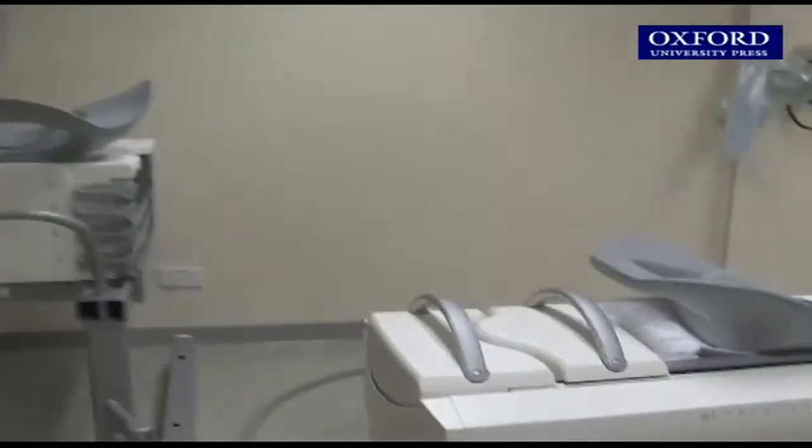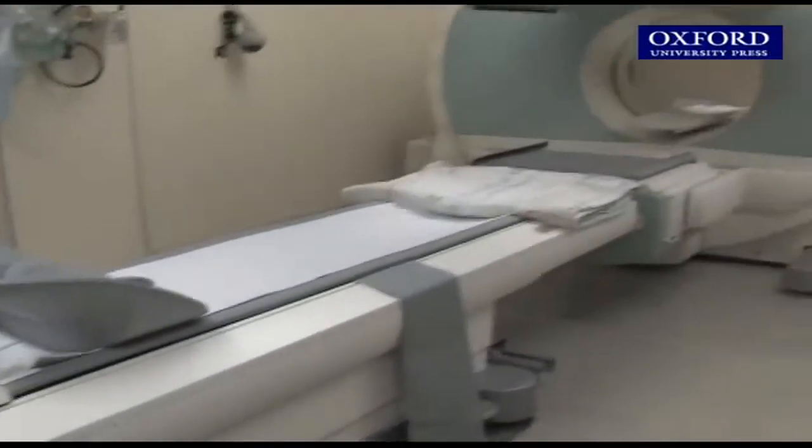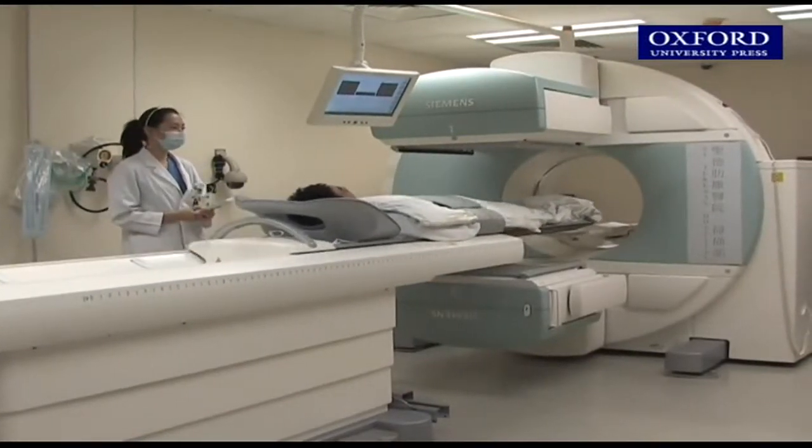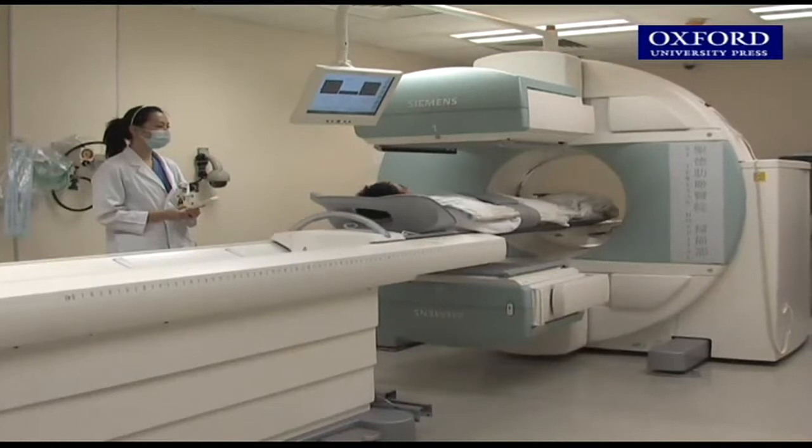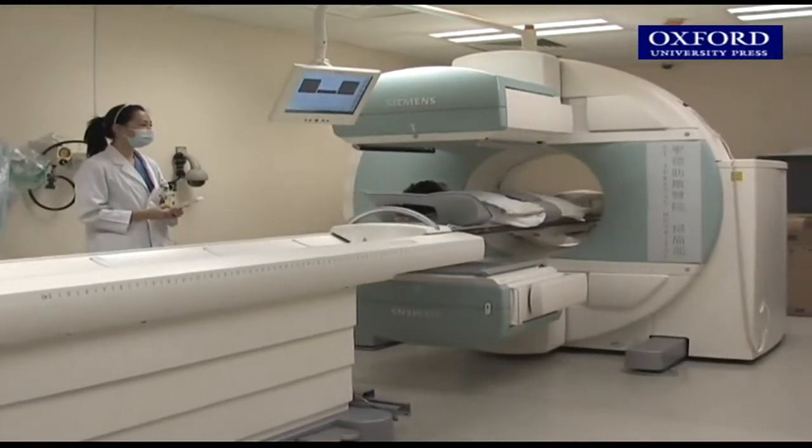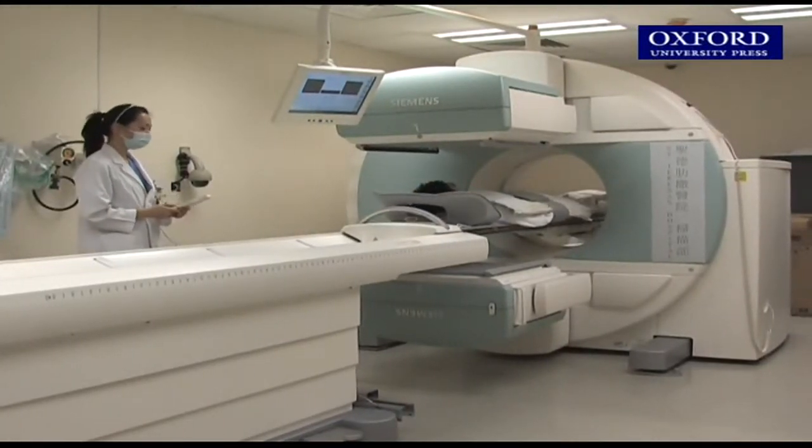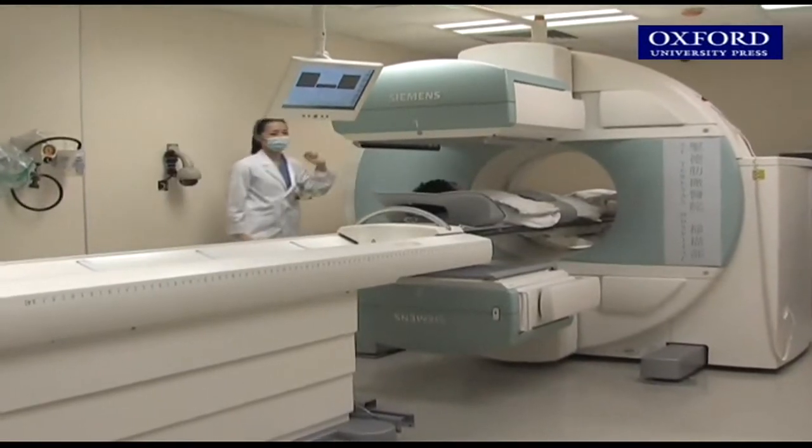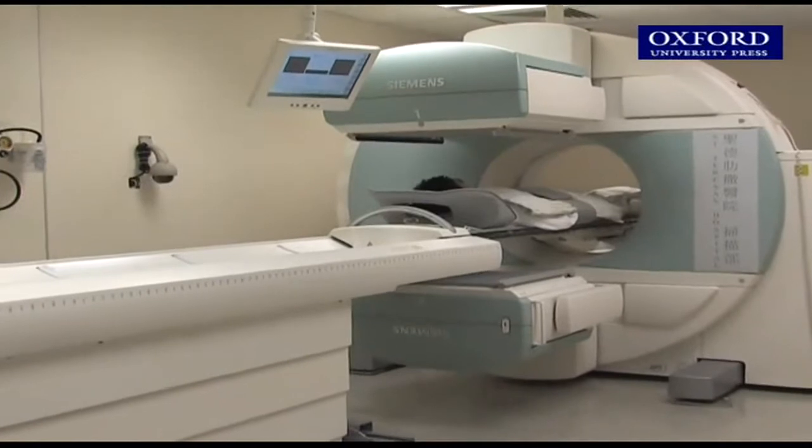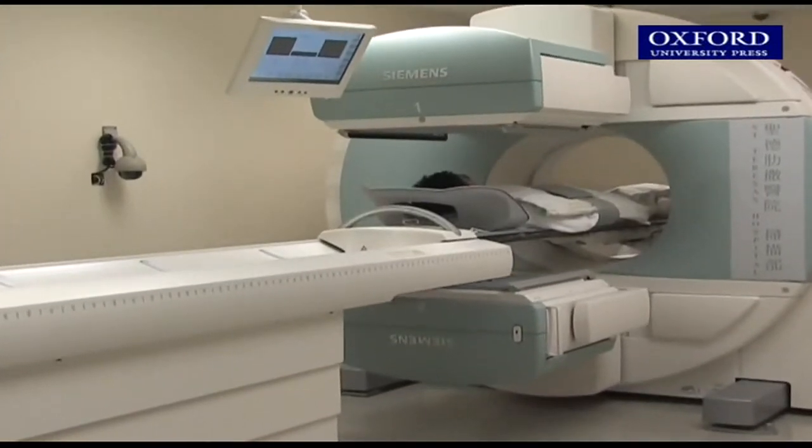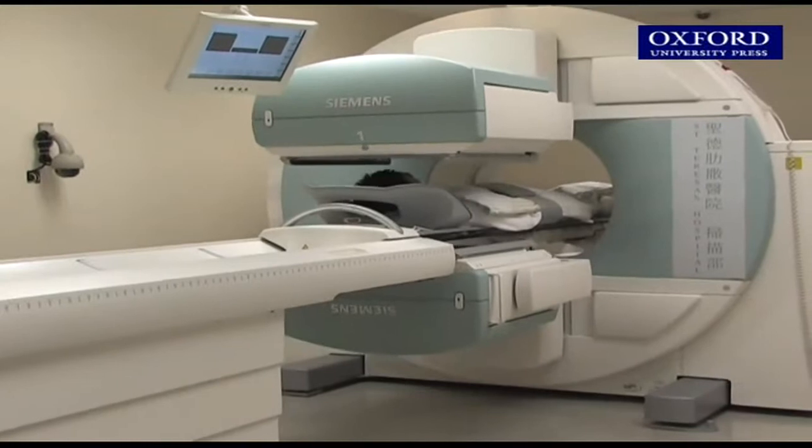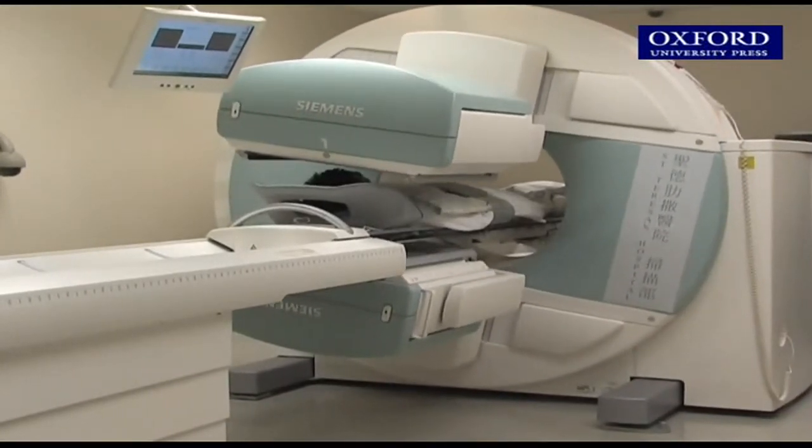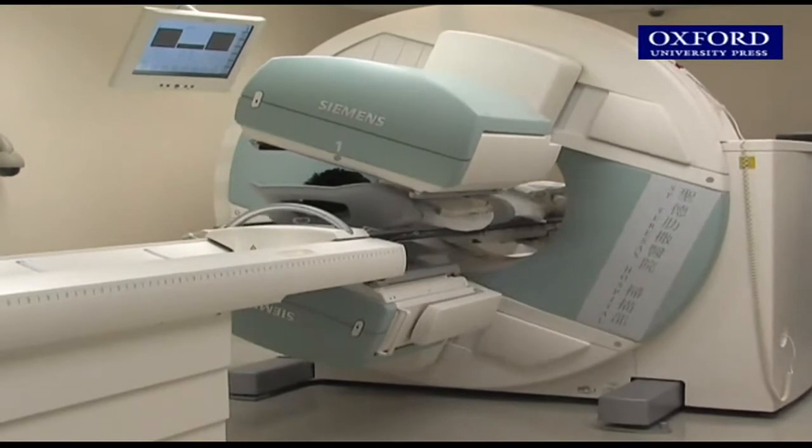This is a gamma camera. It's connected to a computer. A pair of detectors, each located on the top and the bottom, can detect the gamma rays emitted from the patient's body. The computer will then transform the result to images. During the imaging process, the patient is sent through the gamma camera. The detectors rotate around the patient to collect data.